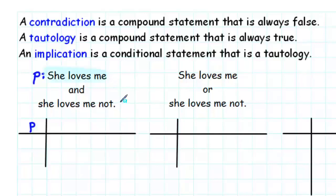Then, she loves me not is just not P, so altogether we have P and not P.